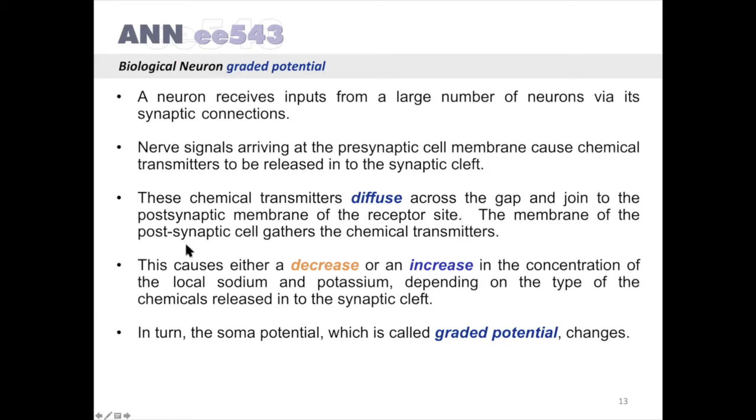These chemical transmitters diffuse across the gap and join to the postsynaptic membrane at the receptor site. The membrane of the postsynaptic cell gathers the chemical transmitters. This causes either a decrease or an increase in the concentration of the local sodium and potassium depending on the type of chemicals released into the synaptic cleft.